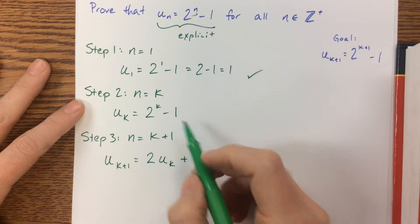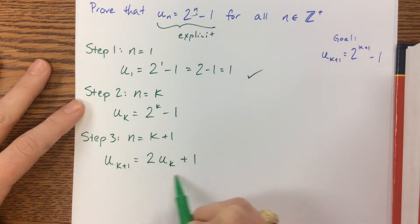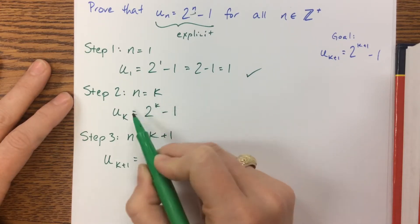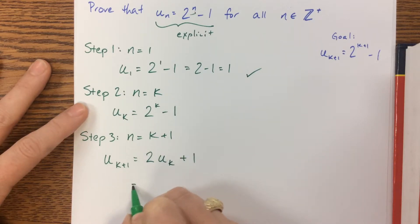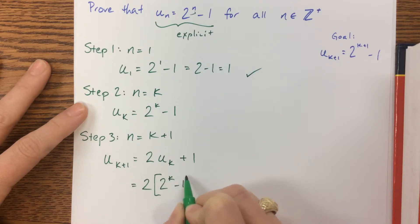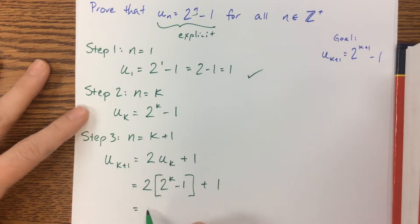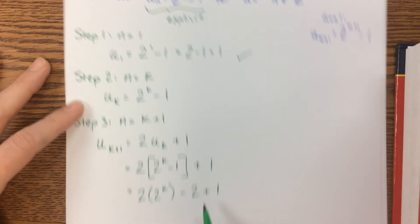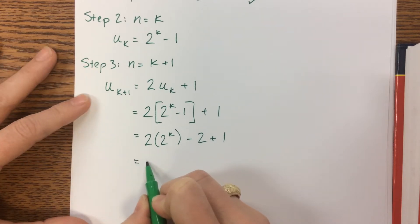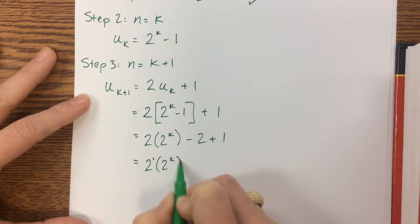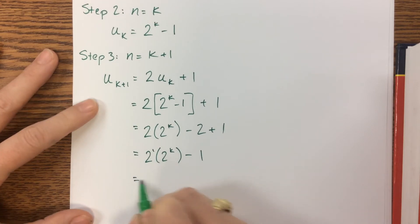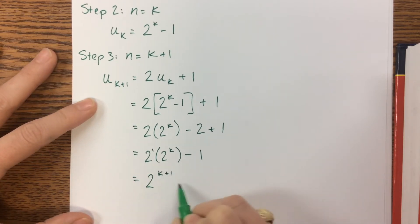If we look back to this, we know that we have a rule for u_k from our assumption. So this would be equal to 2 times (2^k - 1), and we still have plus 1. I've rewritten u_k based on what I assumed before. Now as I distribute through, I have 2 × 2^k - 2 + 1. That becomes 2^1 × 2^k - 1, which can be written as 2^(k+1) - 1.